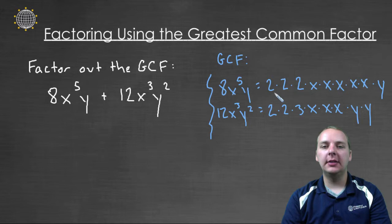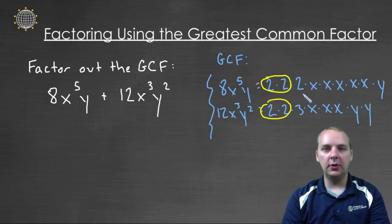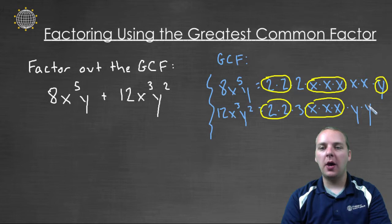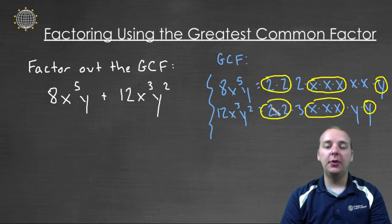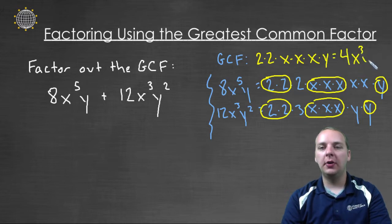Now I want to look at these two terms and see what factors are common to both. This has two squared, and this has two squared — that's the most twos they have in common. This has a two and that has a three, so there are no more common coefficients. Both have x times x times x, so they have x cubed in common, and they both have a y in common. So the GCF, the greatest common factor, would be two times two times x times x times x times y — in other words, four x to the third y.